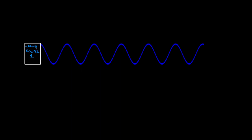Imagine you've got a wave source. This could be a little oscillator creating a wave on a string, or a little paddle that goes up and down creating waves on water, or a speaker that creates sound waves. This could be any wave source whatsoever that creates a nice simple harmonic wave.